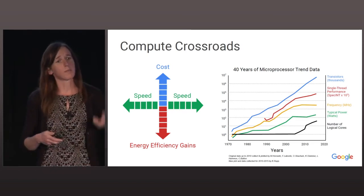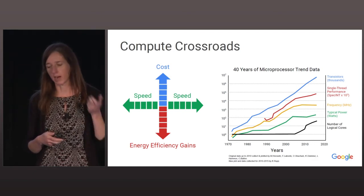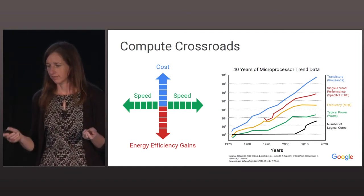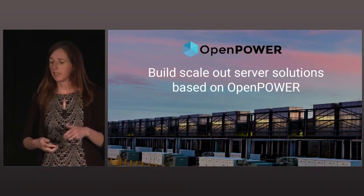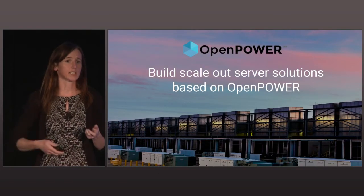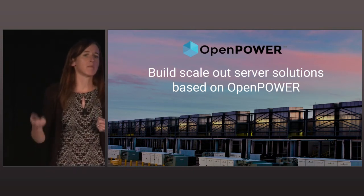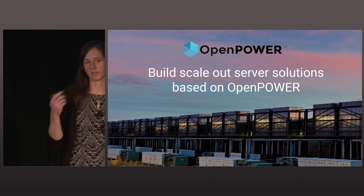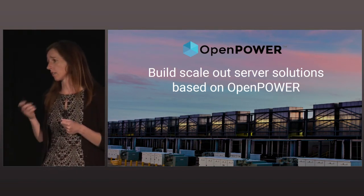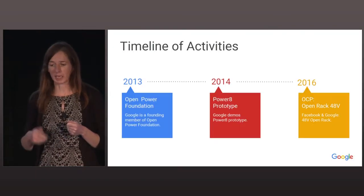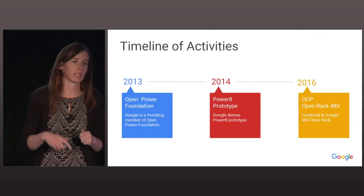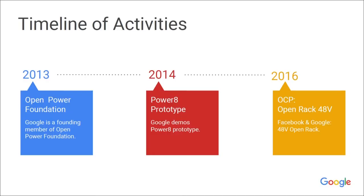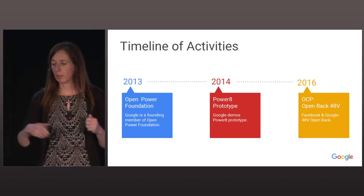That is why Google is backing the vision that underpins the OpenPower Foundation — to build scale-out server systems taking advantage of the amazing IO subsystem that the OpenPower architecture delivers. Google has been part of the OpenPower Foundation since the very beginning; we were one of the founding members in 2013, and at that time our own Gordon McKean, a director in platforms, was the original chair. In 2014, Google demoed a Power 8 prototype server for use by developers at Google.